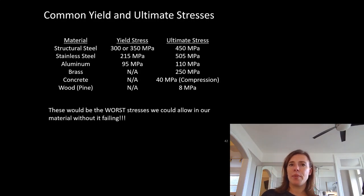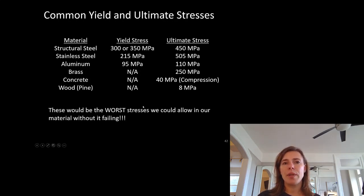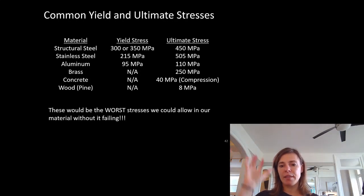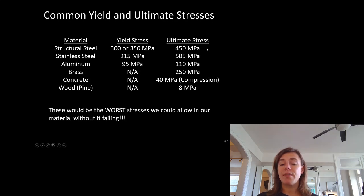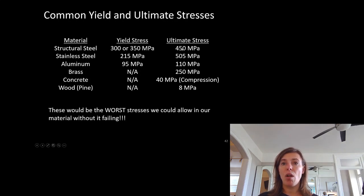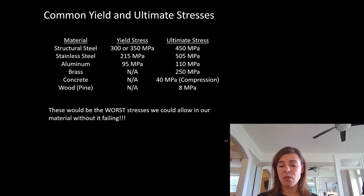Common yield and ultimate stresses: structural steel has a yield stress of 300 or 350 MPa depending on the chemistry used to make it, and an ultimate stress of 450 MPa — with E = 200,000 MPa. Stainless steel and aluminum are not as strong. Concrete and wood have very small strength values relative to steel's ultimate stress, and also much less stiffness, meaning we need more material to make the same loads work.